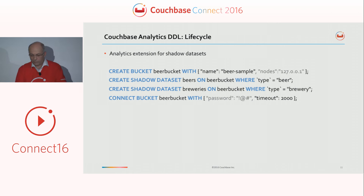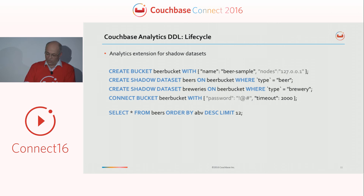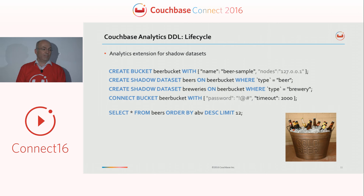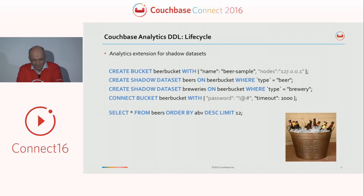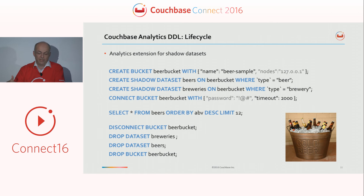Once you've replicated everything, you can run a query. In this case, we're selecting star from beers ordered by alcohol by volume — the strongest beers on top — with a limit of 12. You get the 12 strongest beers. And once you've done that, you can clean up with the inverse statements: first DISCONNECT the bucket, then DROP the datasets, and then DROP the bucket.